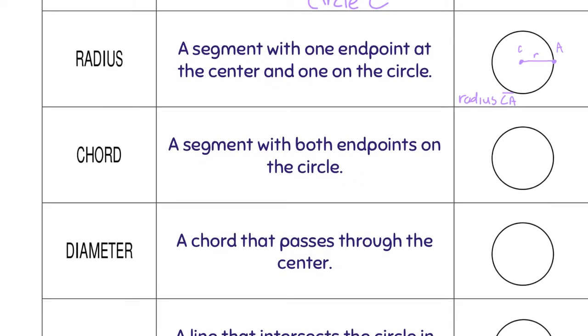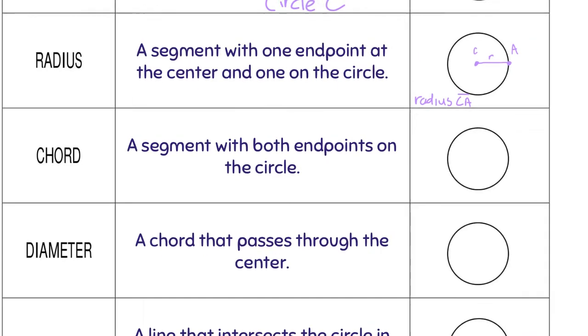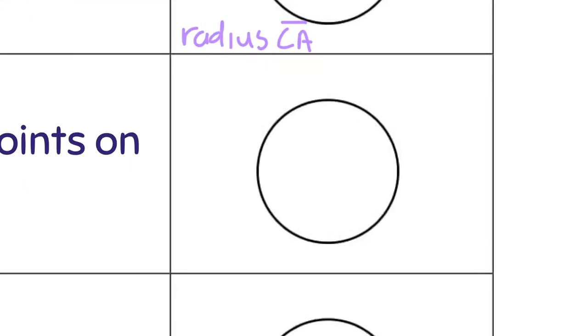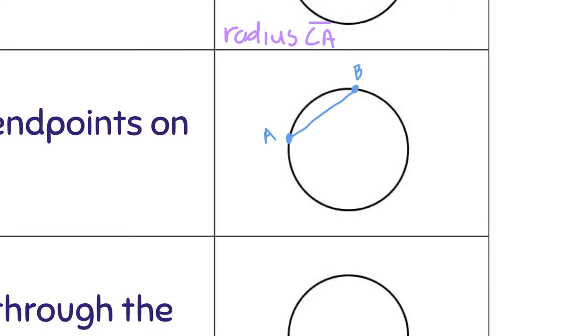The next thing is a chord. This is something new. A chord is a segment with both endpoints on the circle. Both endpoints are on the circle. So say there's one here and there's one here. So that would be a chord. Let's make this A and B. And again, it's a line segment. So when you name it, you just have to make sure you put the line on the top.